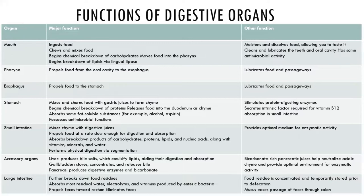Then we have propulsion. The pharynx and the esophagus are both involved in propelling the food, as are other parts of our digestive system such as the small intestine. Propulsion is the movement of food through the alimentary canal by swallowing. Then we have chemical digestion, which is the chemical and enzymatic breakdown of foods into the small organic molecules that can be absorbed within our bodies.